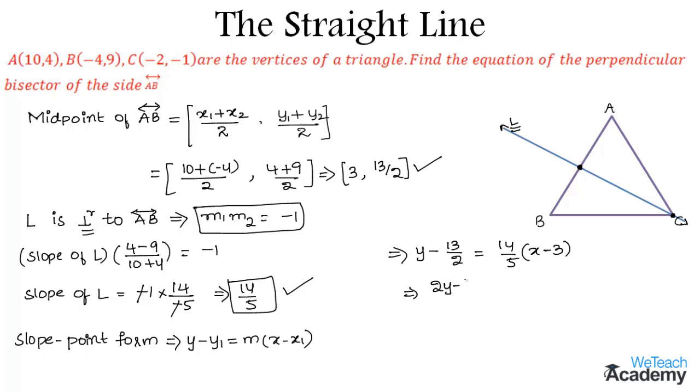That implies (2y - 13)/2 = (14x - 42)/5. By cross multiplying, we get 10y - 65 = 28x - 84. That implies 28x - 10y - 19 = 0.